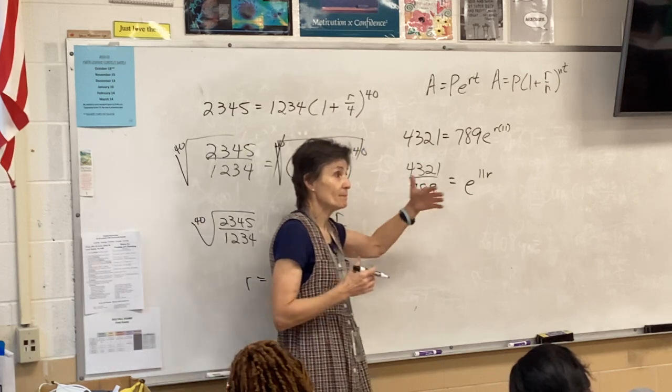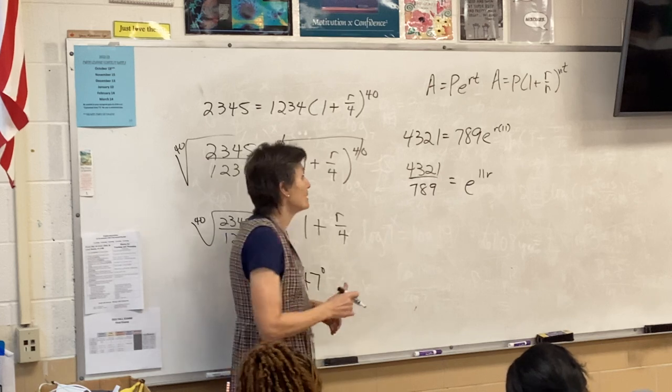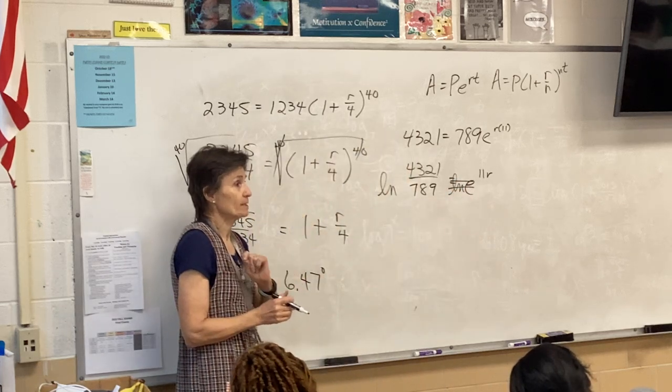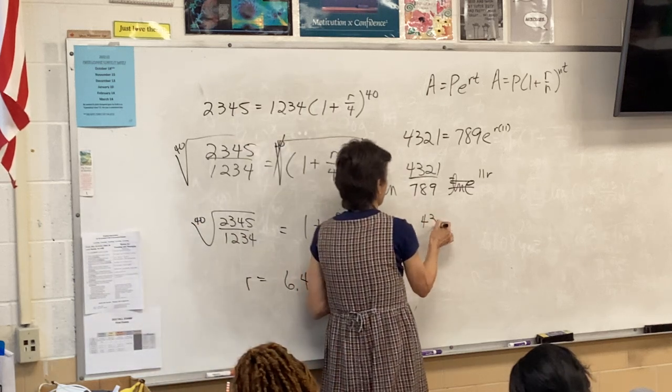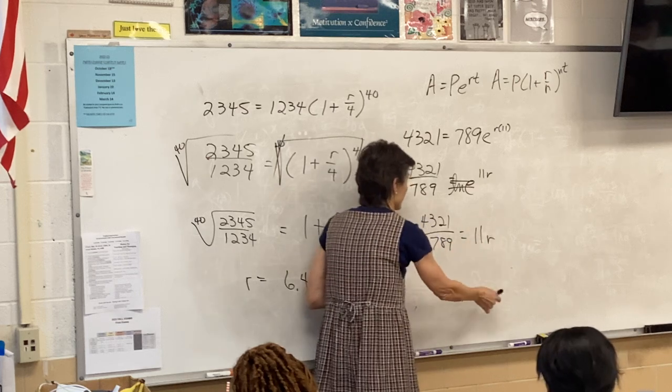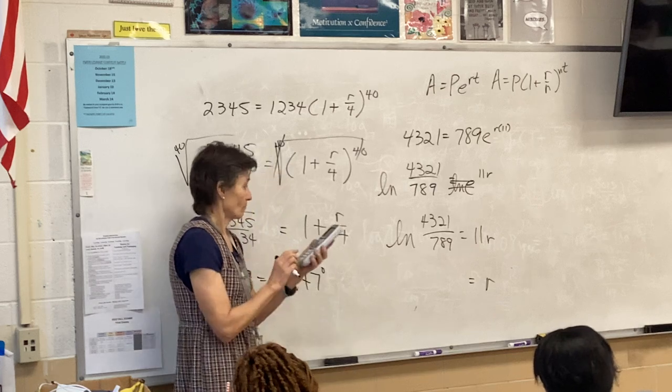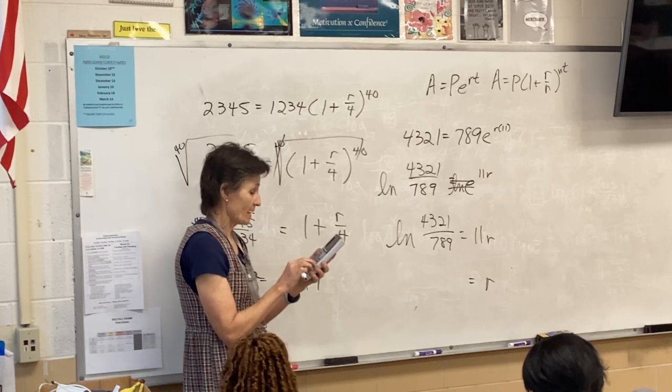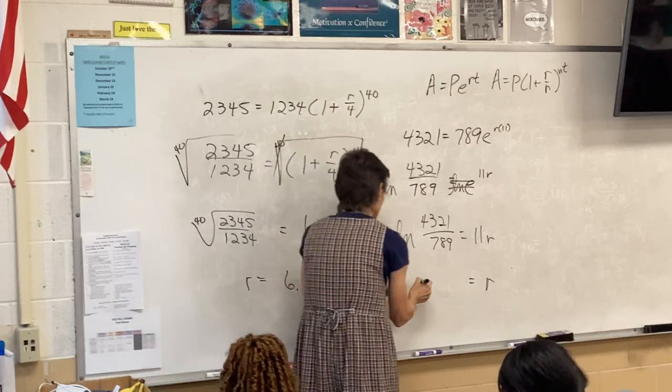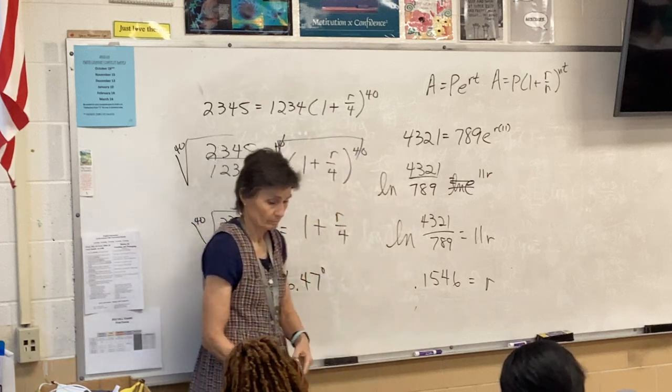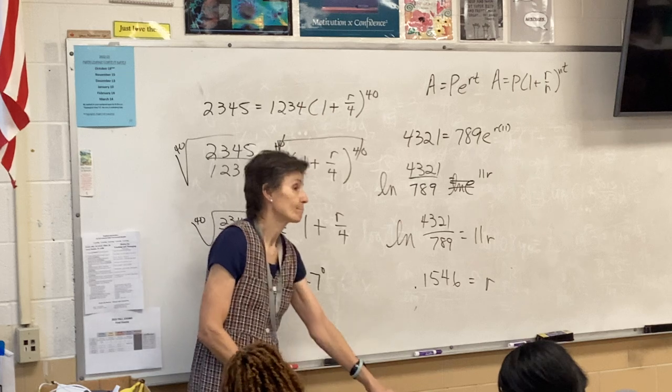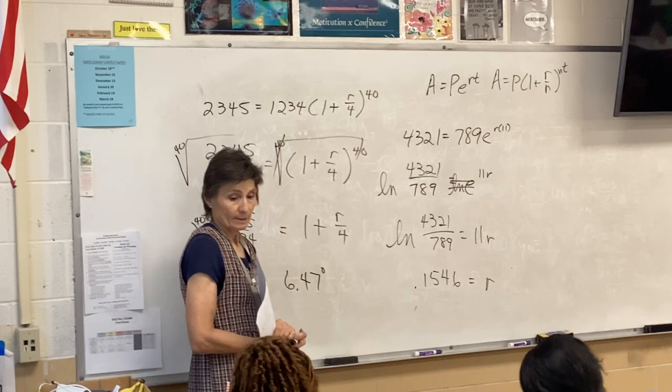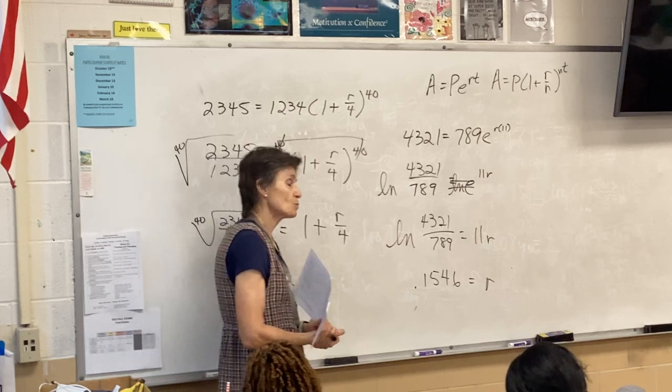Look where my variable is. My variable is an exponent. That means I'm going to need logarithms. Since the problem has an E in it, it would be easier to use natural logarithms. Because an LN and an E in direct contact with each other will disappear, cancel out. This saves me a button on my calculator. LN 4321 divided by 789 divided by 11.